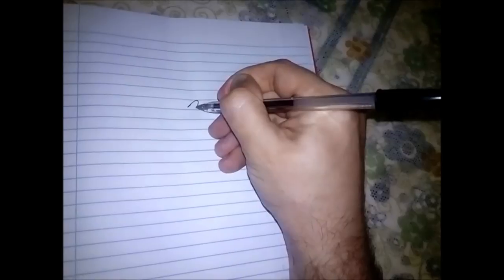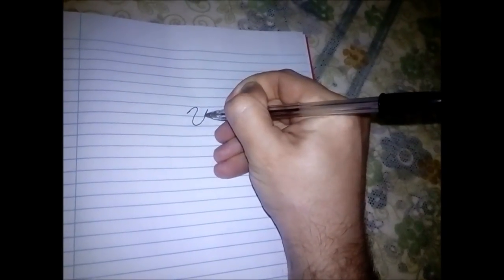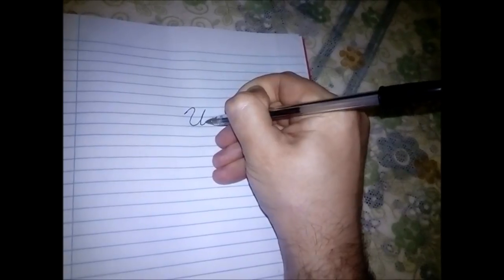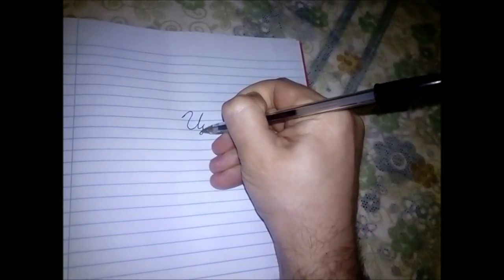And the big letter, let's have a look how it's being written. So first you go up, then you go down, then you go up again, then you go down again, then a little bit up and then down swirl. And that's it, that's the big letter.